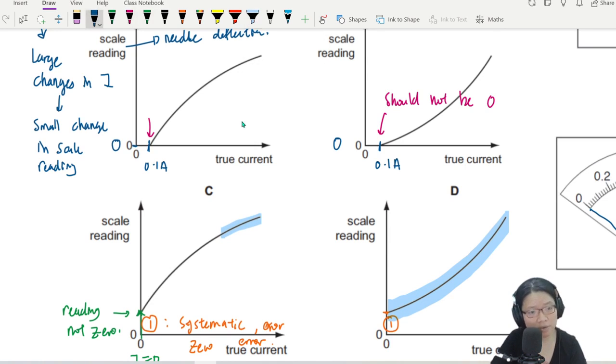You see, our current increased a lot here to here, the delta I. But the deflection is only teensy bit. Let's compare to option D. Again, we try to take roughly the same delta I. So here to here, you can always use your ruler when you do MCQ questions. Here to here, you can see almost comparable delta I.